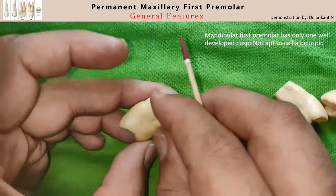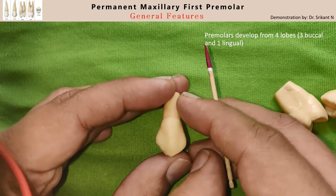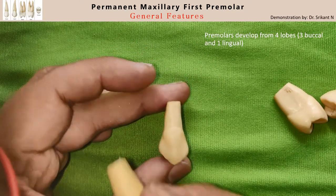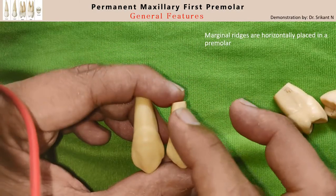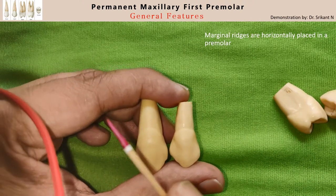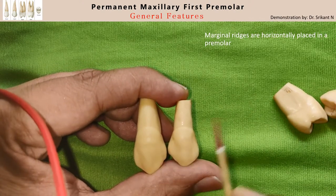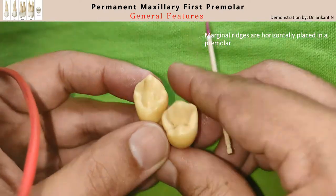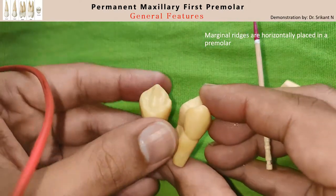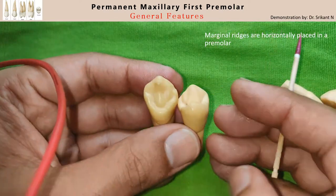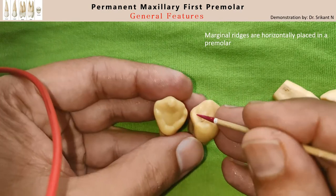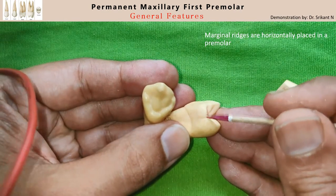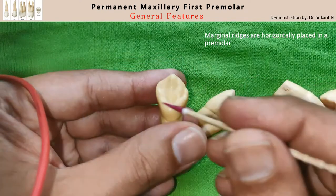Each of the premolars are developed from the same number of lobes as that of the canines, so the premolar looks similar to that of the canine from the buccal aspect. However, when you look at the lingual or palatal aspect, the marginal ridges are more horizontally placed and form a part of the occlusal surface.